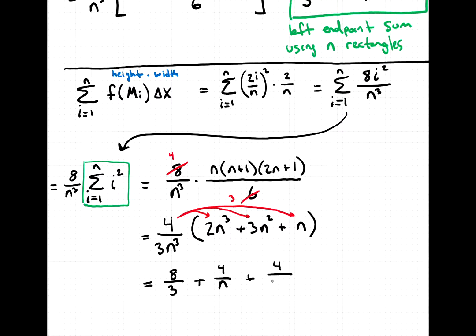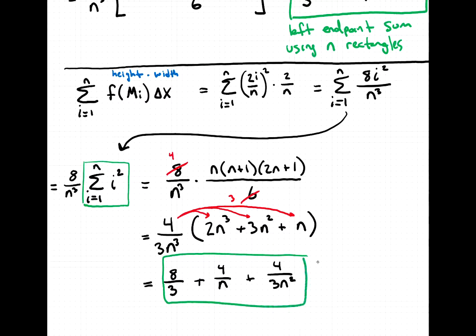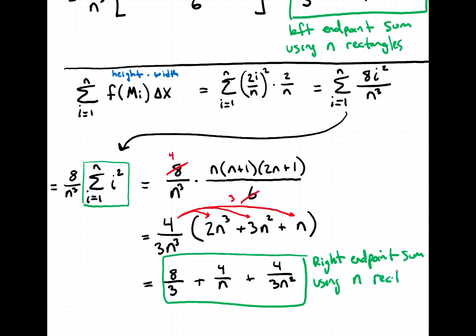So the right endpoint sum using n rectangles is: 8/3 + 4/n + 4/(3n²). This is still an estimate — we haven't taken the limits yet.